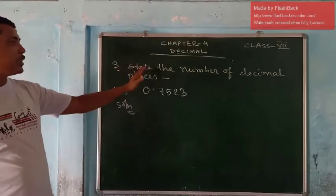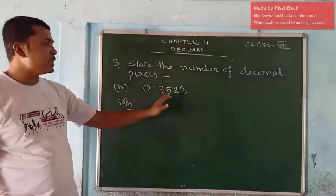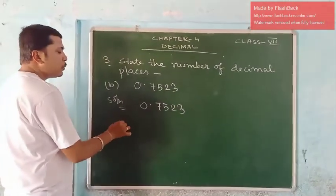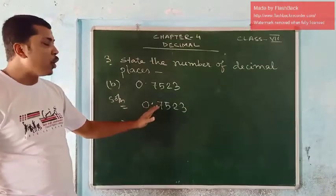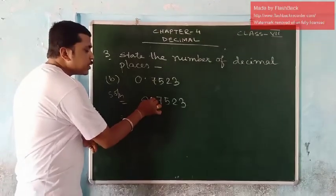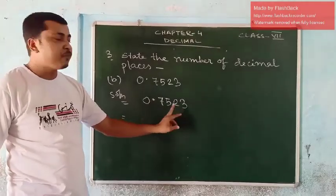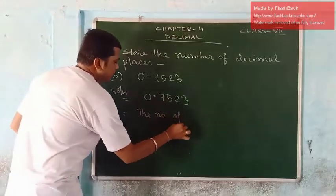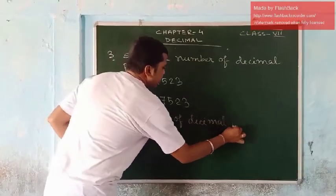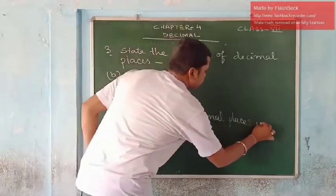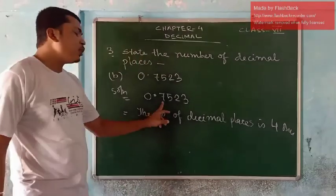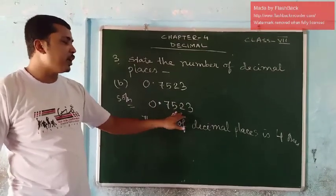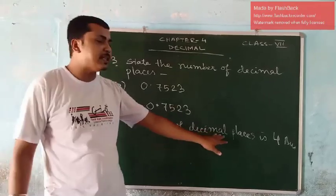In question number 3: state the number of decimal places. The question is 0.7523. I will rewrite the question once again. According to the question, you have to write only the number of decimal places — that means you have to see how many digits are there after the decimal. After the decimal point, we have 1, 2, 3, 4 digits. So the number of decimal places is 4. If there are 2 digits after decimal, the number of decimal places is 2; if 3 digits, then 3.